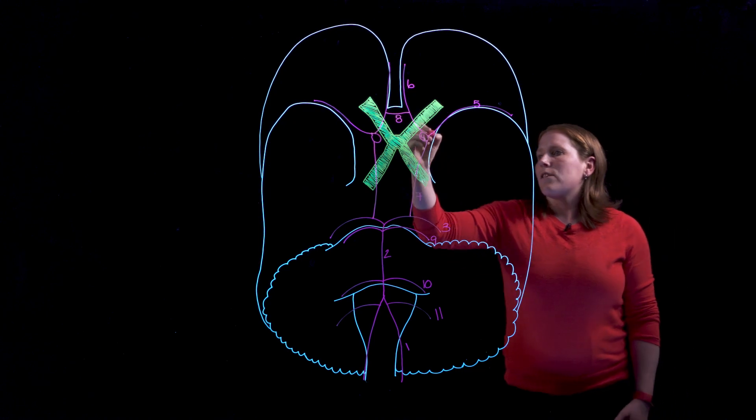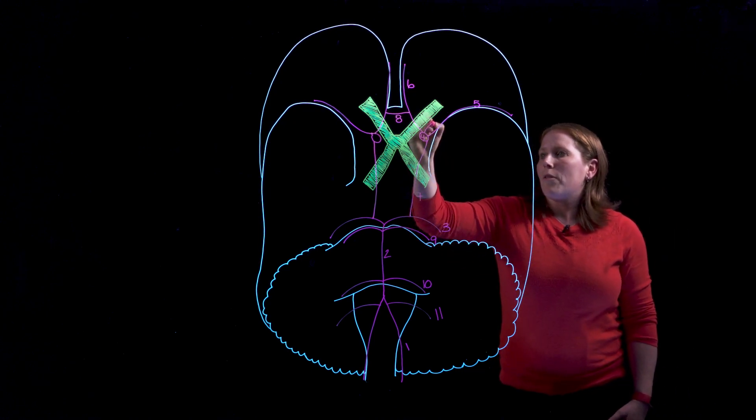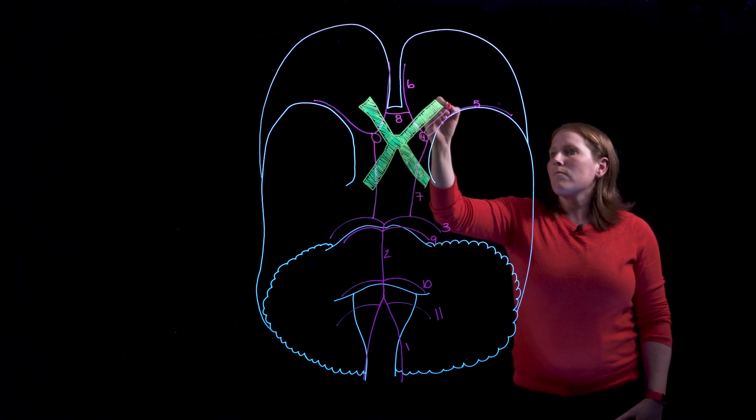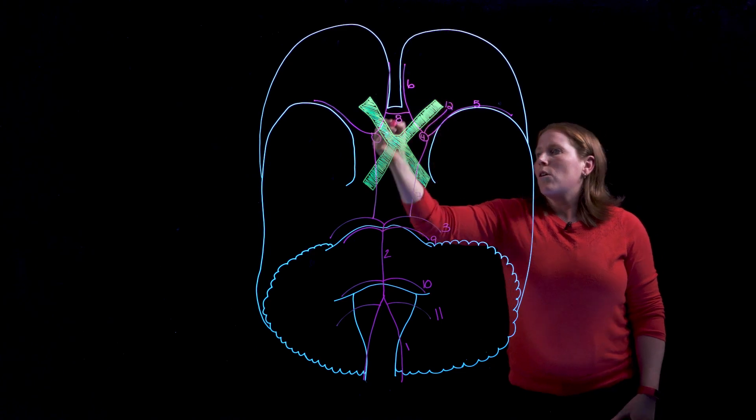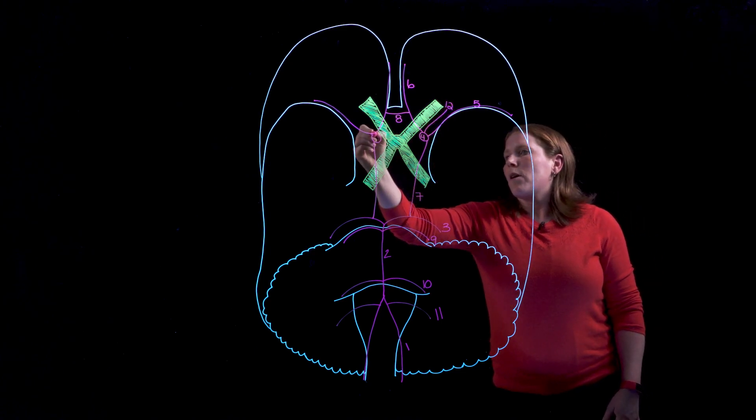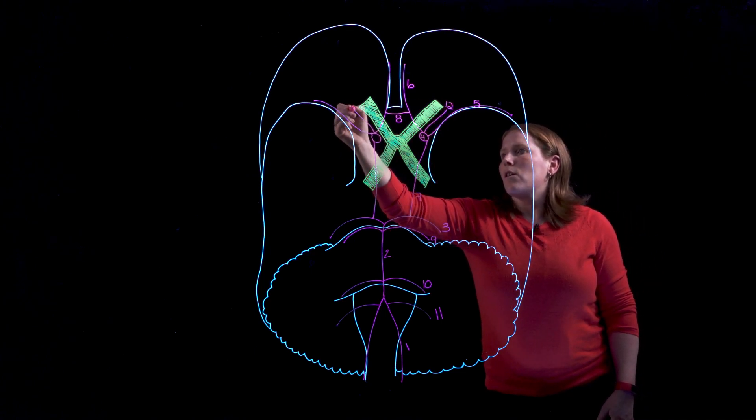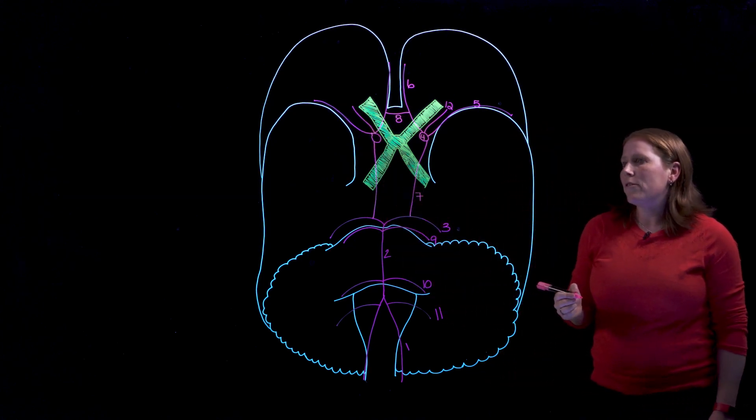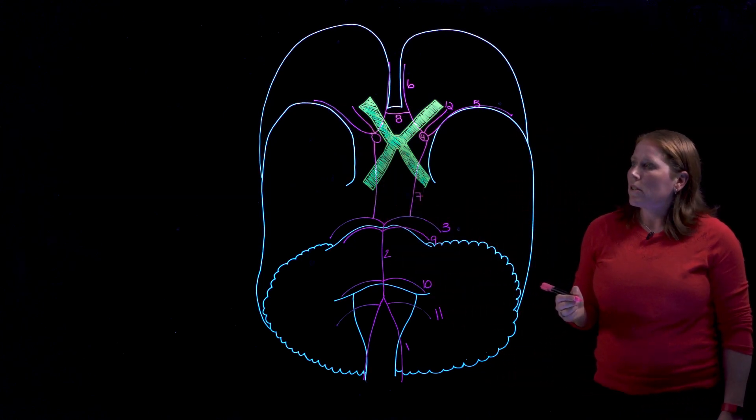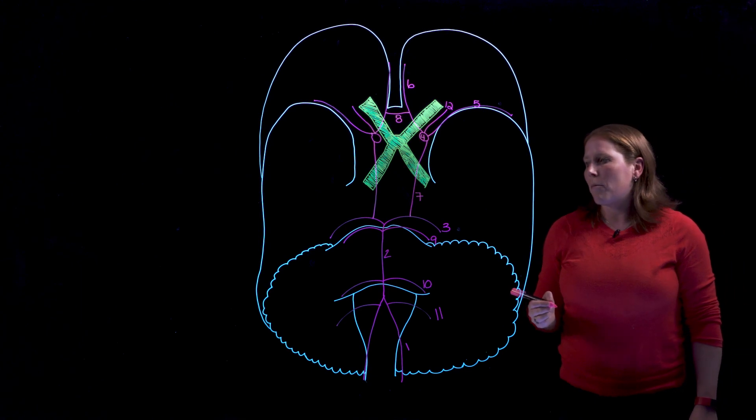We'll also likely ask you to look for the ophthalmic artery which runs from the internal carotid with the optic nerve into the orbit. Okay that's number 12 the ophthalmic arteries.